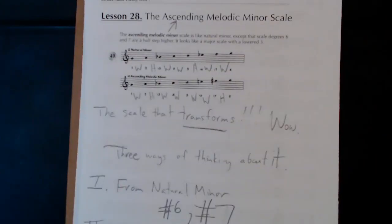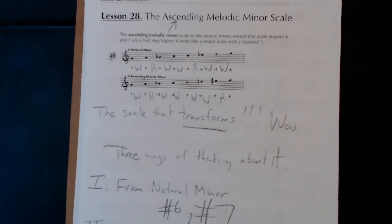Good afternoon. This is a tutorial over Lesson 28 out of the Berklee Music Theory Book 1. Today, we're going to be talking about the ascending melodic minor scale.